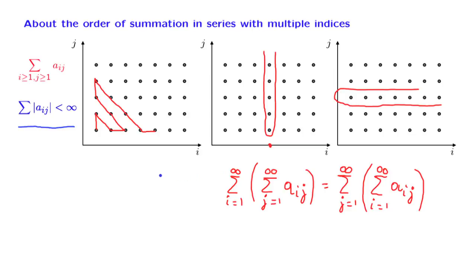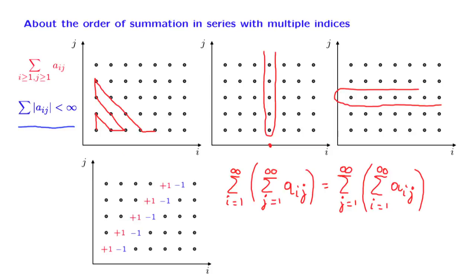A word of caution: this condition is not always satisfied, and in those cases strange things can happen. Suppose that the sequence a_ij takes the particular values indicated in this picture, and all the remaining terms are 0. If we carry out the summation by fixing an i and adding over all j's, what we get is 0 for each row — because in each row we have a 1 and a minus 1, which cancel out and give us 0. So if we carry out the summation in this manner, we get a sum of 0s, which is 0.